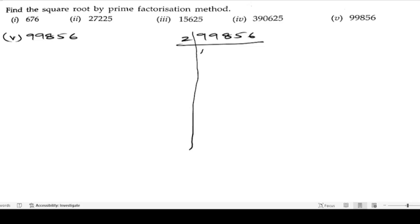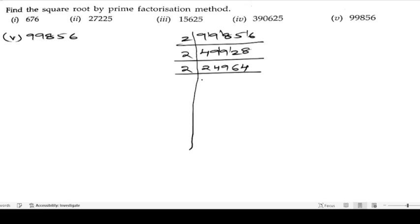Dividing by 2 repeatedly: 2 into 49928, 2 into 24964, 2 into 12482, 2 into 6241. We check: the last digit is 1, and adding the digits 6 plus 2 plus 4 plus 1 is 13, which does not come in the 3 table.